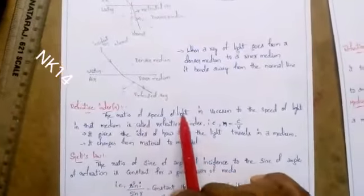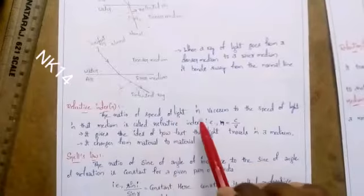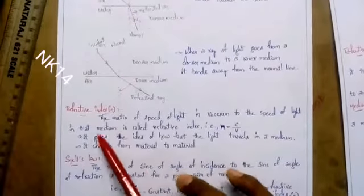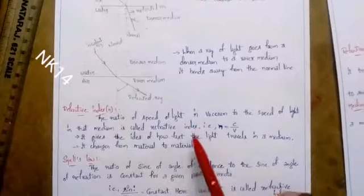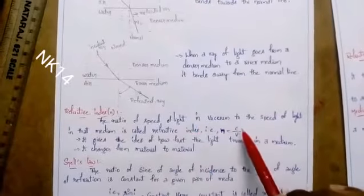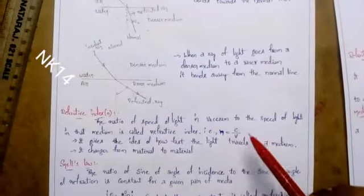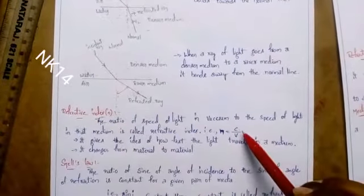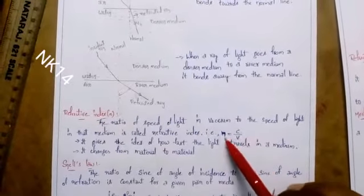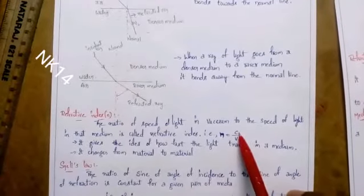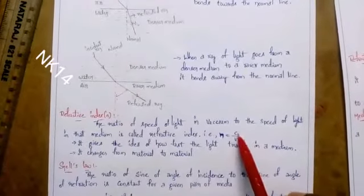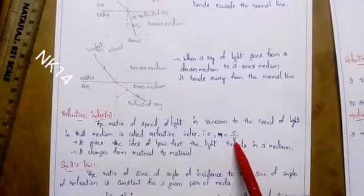Next, refractive index. The ratio of the speed of light in vacuum to the speed of light in a given medium is called the refractive index. It is denoted by the letter n, so n equals the speed of light in vacuum divided by the speed of light in any other medium.